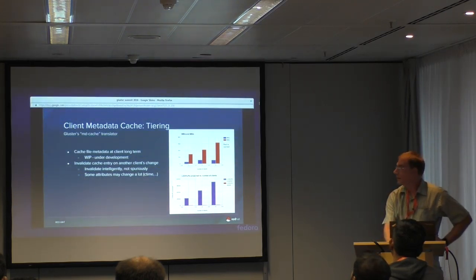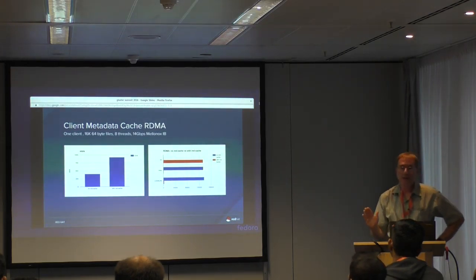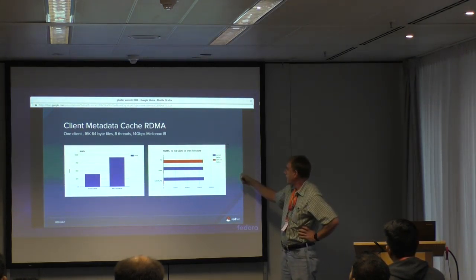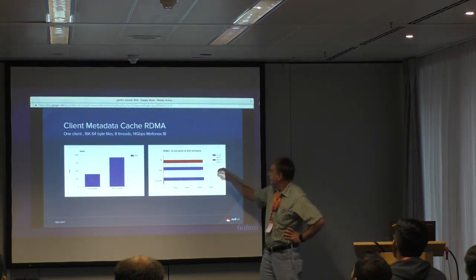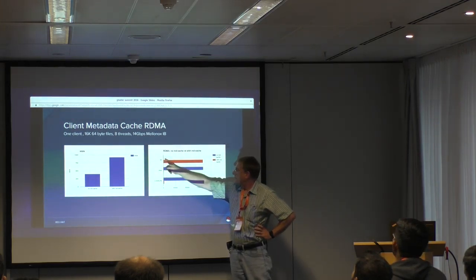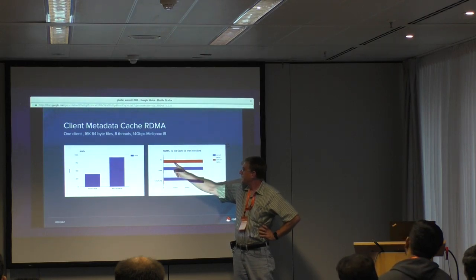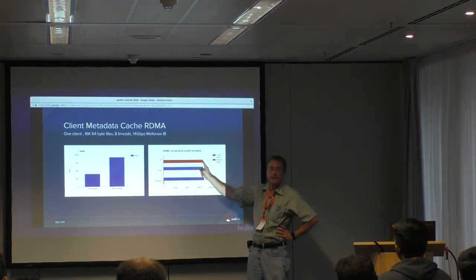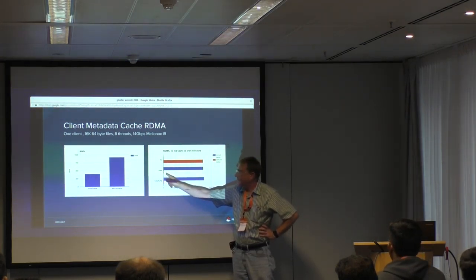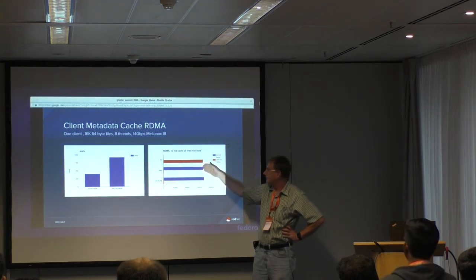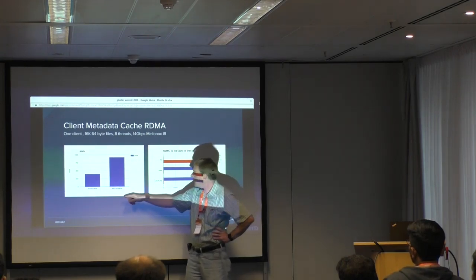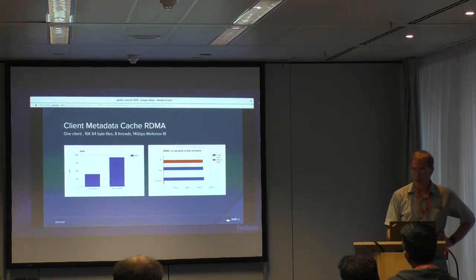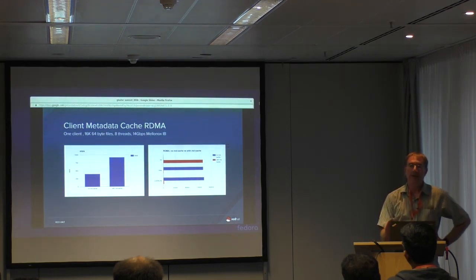That's not just for tiering — that's for Gluster overall. Here is the RDMA result: the blue is the number of cache hits on the client without MD cache, and the red is cache hits with MD cache turned on. These are cache miss and cache hit counters on the client-side cache, and this is the number of lookups, and here is the performance benefit with RDMA — without MD cache and with MD cache. We've just improved our MD cache performance dramatically. I think you'll see performance benefits everywhere if we can just get this MD cache thing to work.